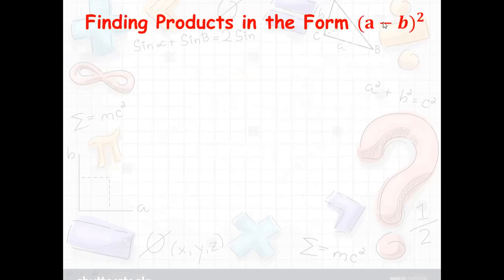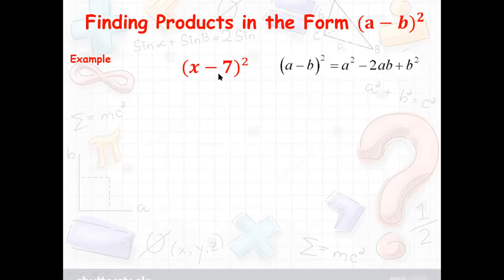Now let me move on to (a - b) whole squared. It's the same — only the sign is different here. As a result, instead of the plus sign in the previous formula, it is replaced by a minus sign. Now in place of a, it's x. In place of b, it is 7. Do not look at the negative sign — do not bother about the sign, because we already have the signs in the formula.